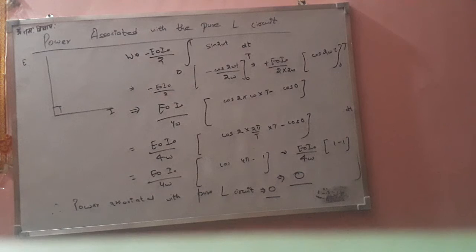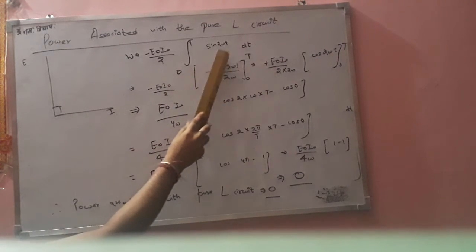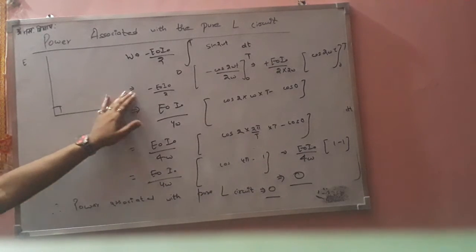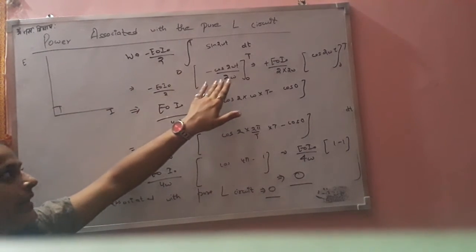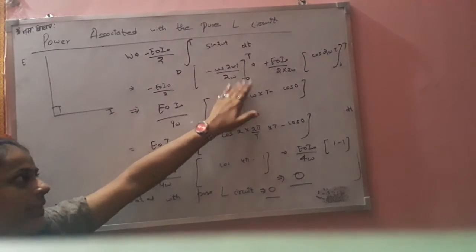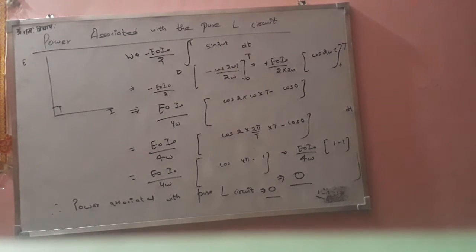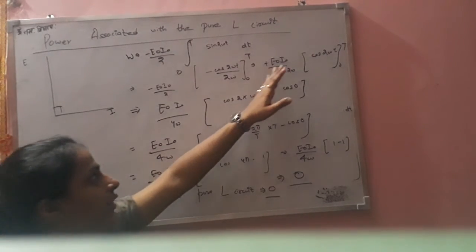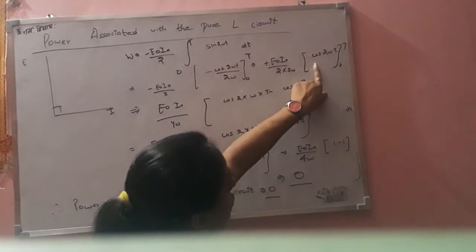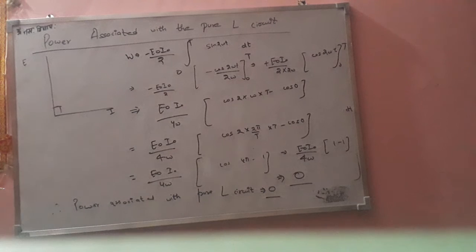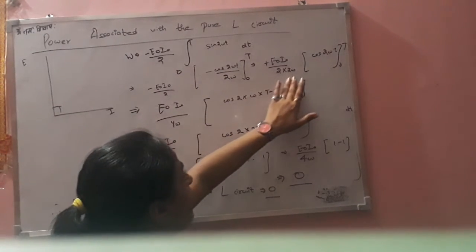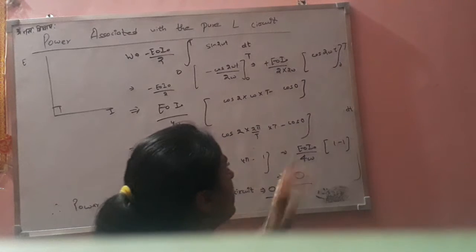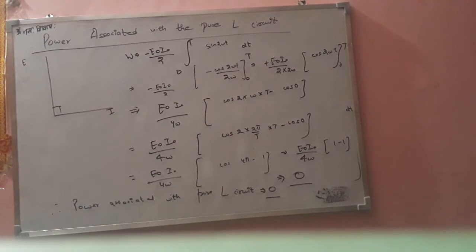Work done equals minus E-naught·I-naught by 2, times the integration from 0 to T of sin(2·omega-t)·dt. The integral of sin(2·omega-t) is minus cos(2·omega-t) divided by 2·omega, with limits from 0 to T. So this gives E-naught·I-naught by 4·omega, times cos(2·omega-t) evaluated from 0 to T.